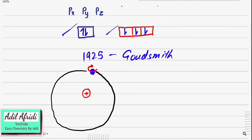In summary, the four quantum numbers are: the spin quantum number, the magnetic quantum number, the azimuthal quantum number, and the principal quantum number — together giving the complete address of an electron in an atom.